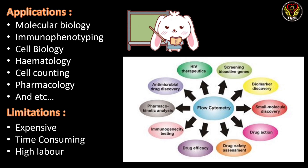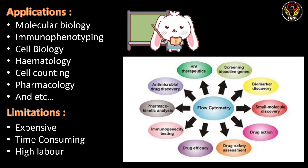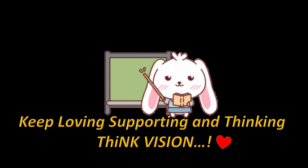Flow cytometry has a few limitations. It is expensive due to its sophisticated instrumental setup involving laser focusing, detectors, and signal conversion to graphs. The second limitation is that it is time-consuming. Since this is a principle-oriented technique, it requires skilled operators — the person handling the instrument must be skilled and have a complete understanding of the instrument.